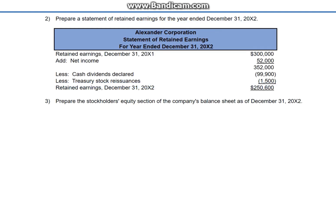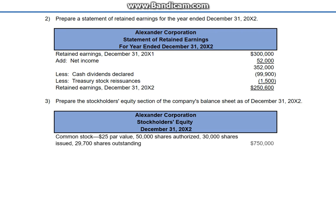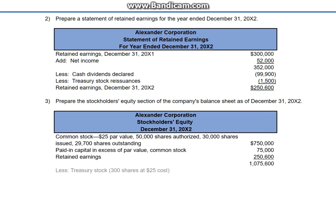Prepare the stockholders' equity section of the company's balance sheet as of December 31st of the current year. The balance in the common stock account remains at $750,000 — $25 par value multiplied by 30,000 shares — as no additional shares have been issued. Similarly, the balance in paid-in capital in excess of par value common stock remains unchanged at $75,000. Retained earnings, from the statement of retained earnings, is $250,600. But 300 shares are still held in Treasury, so we subtract the Treasury stock balance equal to the cost of 300 shares, $7,500. Total stockholders' equity at December 31st is $1,068,100.